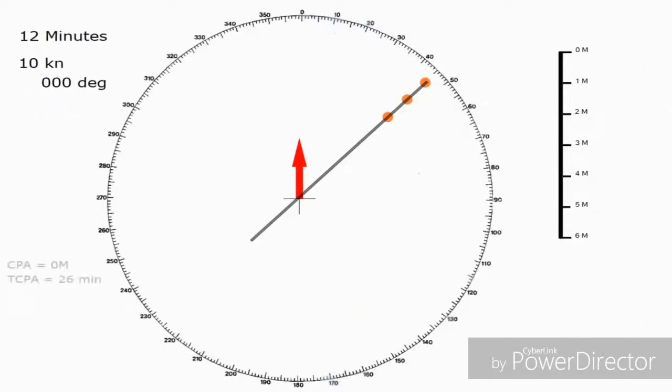We can start writing these down the side. So our CPA as we've said is zero and our time to the closest point of approach is 26 minutes. There's a couple more bits of information we need. The next ones are going to be the target vessel's course and speed.